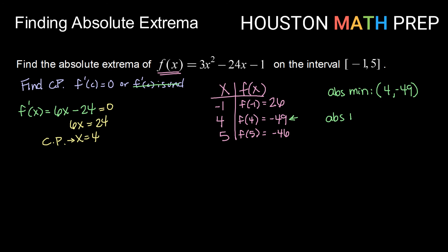And my absolute maximum will be my largest y value, which is positive 26. So that will occur at the point (-1, 26). So there we have our absolute minimum and our absolute maximum for this f(x).